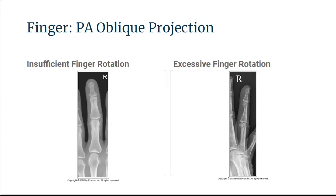In the case of insufficient finger rotation, the phalangeal mid-shaft concavity and soft tissue width on both sides of the digit are more nearly equal, meaning the finger was not rotated the required 45 degrees. In the case of excessive finger rotation, the soft tissue width on one side is more than twice as much as the other, and when one aspect of the phalangeal mid-shaft is concave but the other is slightly convex, that indicates the finger was rotated more than 45 degrees.